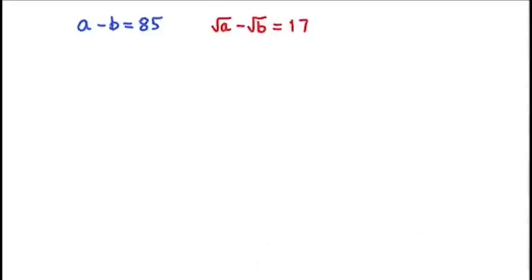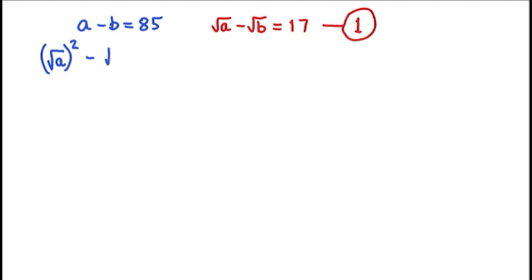So let's get started. We're going to set the first equation — square root of a minus square root of b — as equation 1. Now let's concentrate on a minus b is equal to 85. We can write a as the square root of a, all squared, minus b as the square root of b, all squared, is equal to 85.